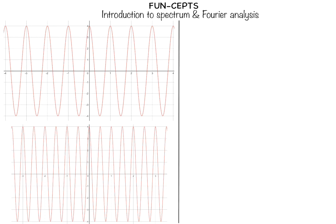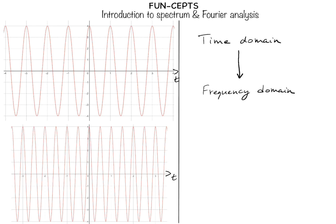First of all, if you notice these two waveforms here, they are both in the time domain. What we have on the x-axis is time, so these are in the time domain. Basically, these waveforms are signals — nothing but voltages changing with time — so we call them as existing or present in the time domain. In contrast, the spectrum is a representation of the same signals but in the frequency domain, so we will transform the signal from the time domain to the frequency domain.